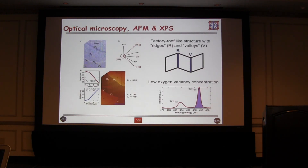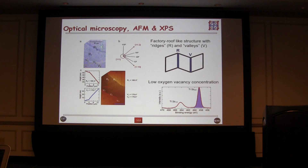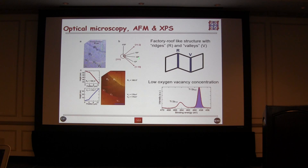Pre-characterization was done by optical microscopy — we can see these ferroelastic domain walls. The surface looks basically like a factory roof: ridges and valleys. We look at exactly the same area in AFM, giving a 2D view of the topography with different ridges, different domain walls and valley walls. The angles are important, which I'll discuss in the next slide.